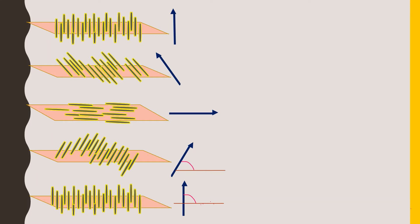Each layer carries its own director. The distance covered by the director when it returns to the same direction is called the pitch. The cholesteric phase is like the nematic phase in that it has long-range orientational order with no positional order. However, this phase differs from the nematic phase in that the director varies in direction throughout the medium in a regular way — the director is not fixed, unlike in nematic liquid crystals where all molecules follow the same director.